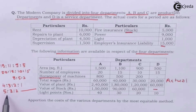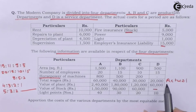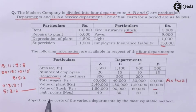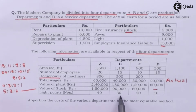Value of stock: 1,50,000; 90,000; and 60,000 — ratio 5:3:2. Note that stock expenses will not apply to the service department D. Light points: 40, 30, 20, and 10 — ratio 4:3:2:1.